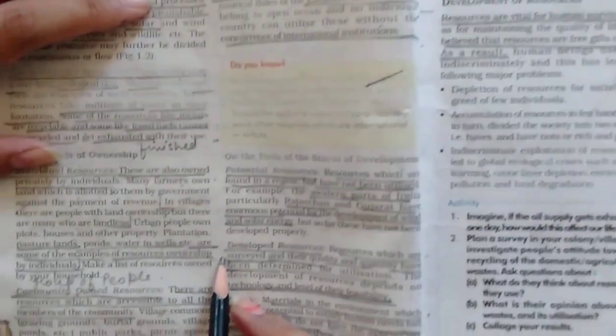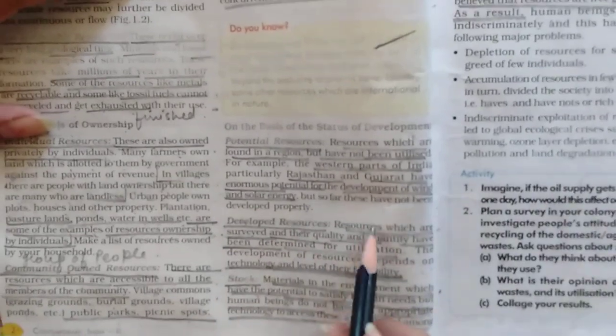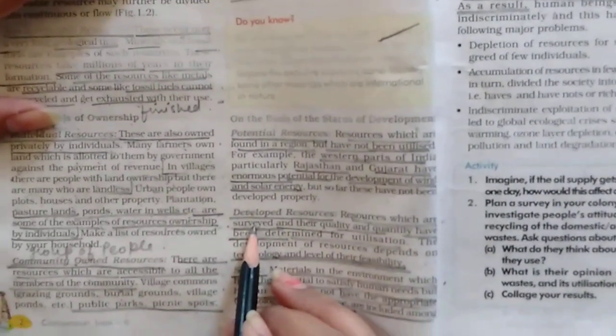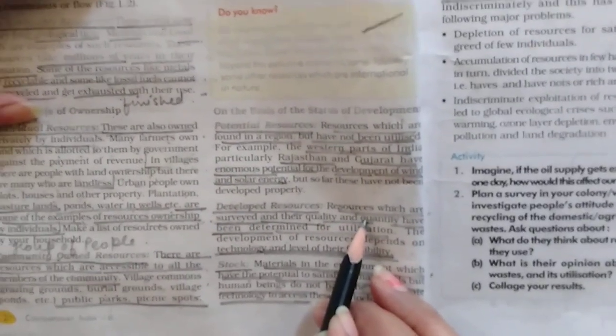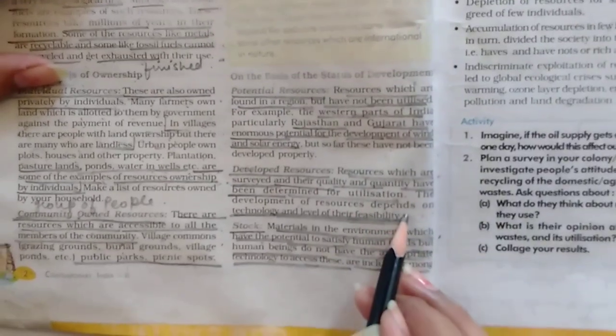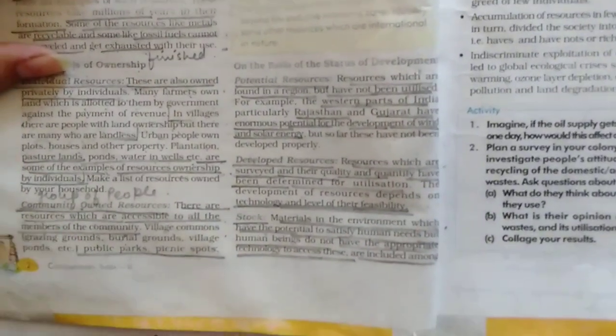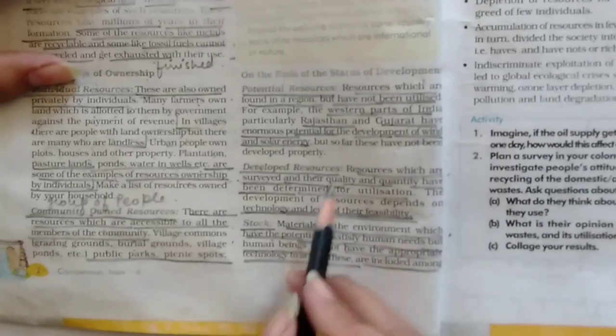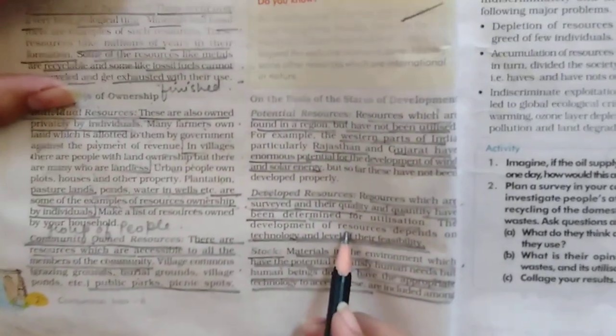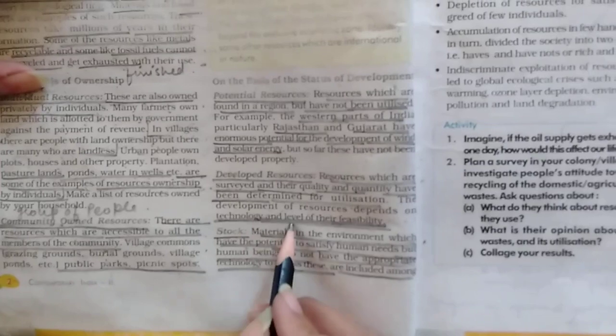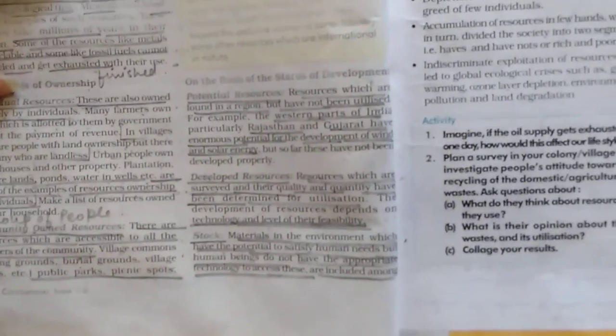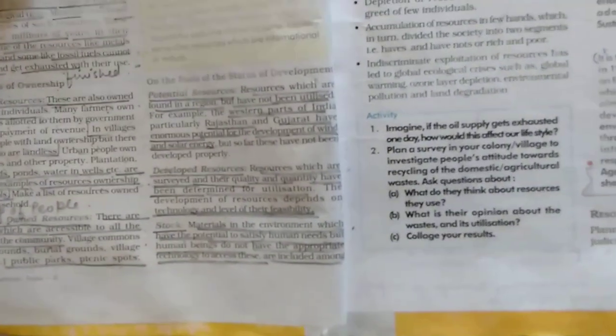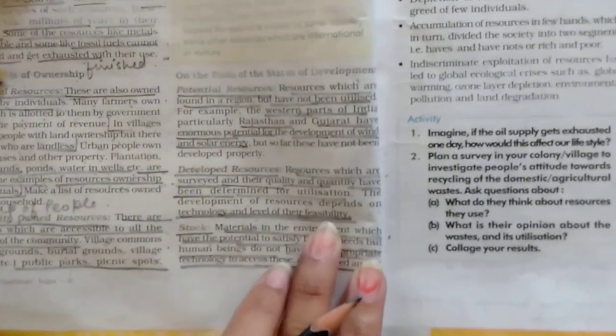Then we talk about developed resources. Aise resources, jinn ka survey kiya gaya hai, unki quality or quantity ko determine kiya gaya hai, use ke liye, aur hum uski use ko technology pe depend chodh te hai. That means those resources are totally dependent on their technology and their level of economic feasibility ki woh humare pocket ke liye ya humare liye amount mein kitna feasible hai.